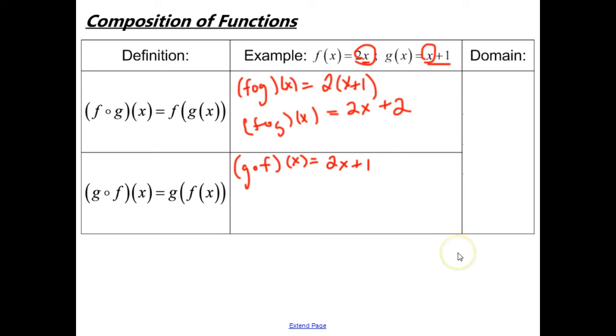Now when we talk about the domain of composition of functions, there are three things you need to do. First, you need to check the domain of the input function, so the one on the inside, and then check the domain of the composition function, the one together, and then choose the one that is the most restrictive. So in our case, they're both going to be all real numbers, negative infinity to positive infinity. So that would be our domain for these.